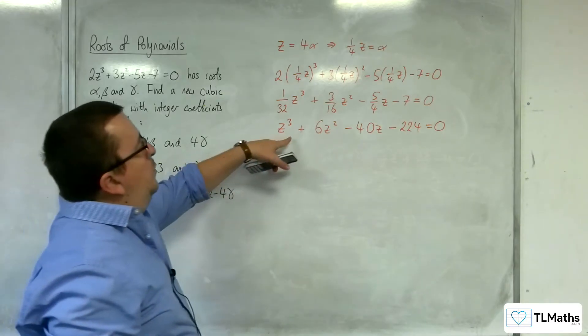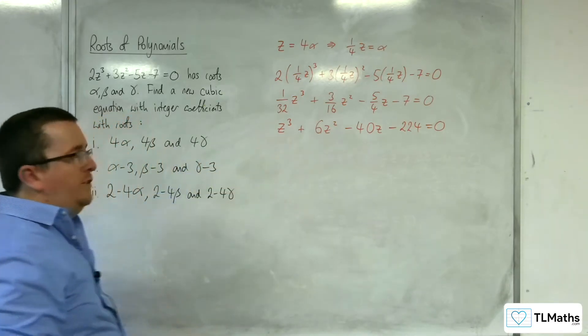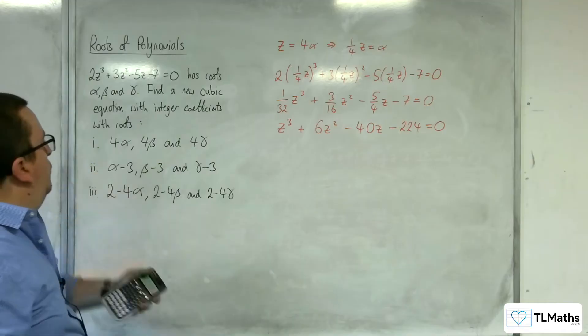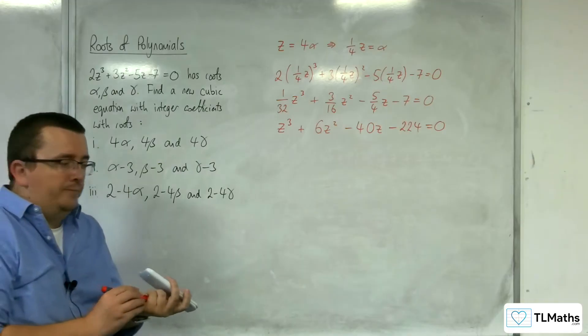And so this will be the cubic equation with integer coefficients that has the roots 4 alpha, 4 beta, and 4 gamma.